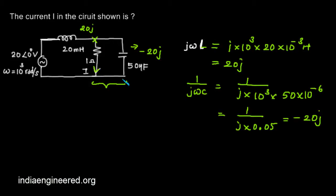That will be 1 × (-20j), that is -20j, divided by 1 + (-20j), that is 1 - 20j. We have found out what is the equivalent effect.